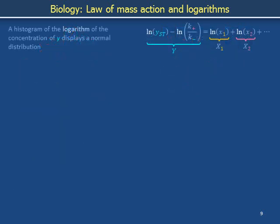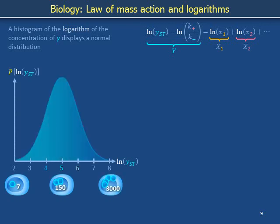If capital Y is Gaussian distributed, then the natural log of Y_ST is also Gaussian distributed because capital Y and natural log Y_ST are distinguished by only a constant. The single cell levels of the natural log of steady state protein level Y_ST fill out a normal distribution. This particular example has a peak at natural log Y_ST equals 5 and a standard deviation of 1.